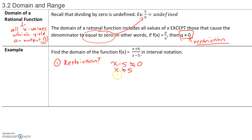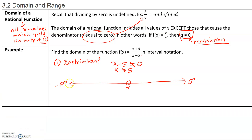The next step is writing this in interval notation. x cannot equal 5. The easiest way to do it is to use a number line. On one side you have negative infinity, on the other side positive infinity. x can be any value we want because any value except 5 will yield a value for f(x). But x cannot be 5, so at x = 5, we will have a hole in our domain. The domain is the set of all x values from negative infinity to positive 5, and also from positive 5 to infinity — essentially all values except 5.